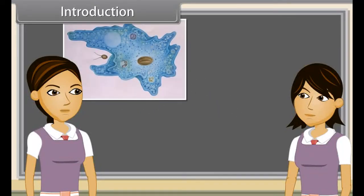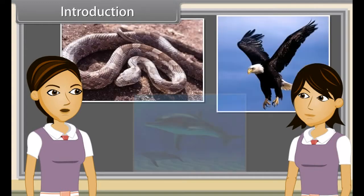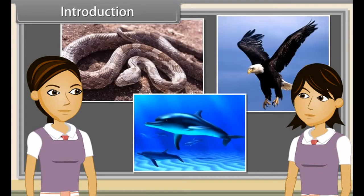Can you name this organism? Yeah, this is amoeba. Name these organisms as well. The first one is a tree and the second a dinosaur. Identify these creatures. Snake, eagle and dolphins.